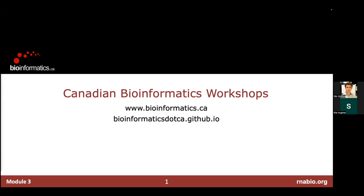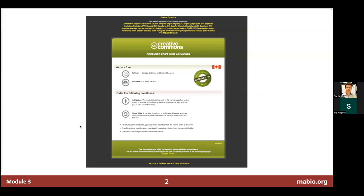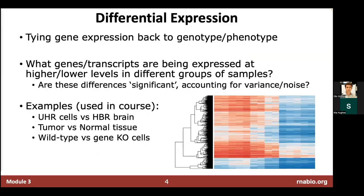We're going to do a quick lecture on high-level differential expression concepts, and then we'll pivot right back into continuing the practical exercises. The idea of differential expression is really trying to take the gene expression or abundance estimates that we're generating and tie them back in some way to genotype or phenotype. We're usually asking questions like which genes or transcripts are being expressed at higher or lower levels in different groups of samples, and are these differences significant — accounting for variance and noise in the data?